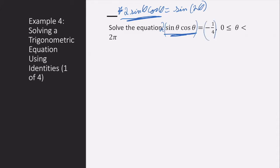And I do that on both sides. So now I have two sine theta cosine theta equals negative one-half. So I can replace that with sine of two theta. So sine of two theta equals negative one-half. So this is a great start.